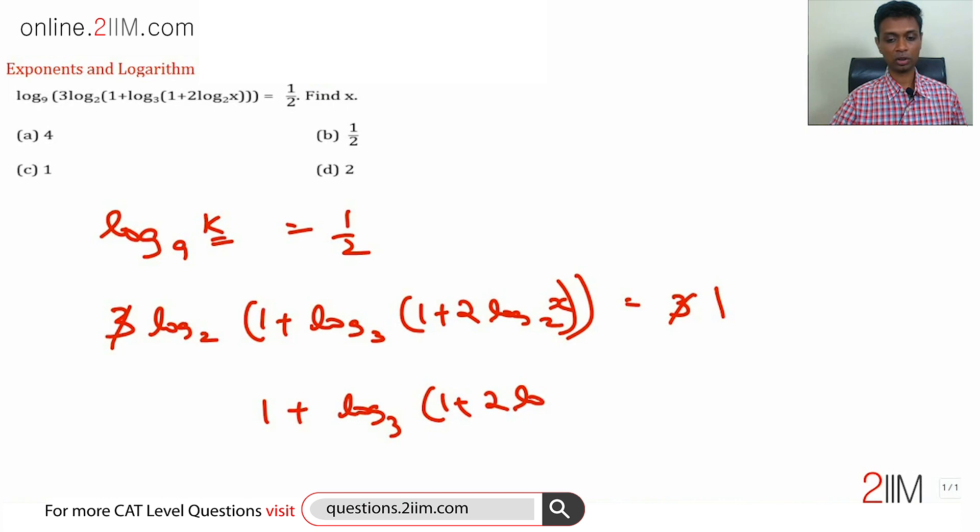Log to the base 2, log of this number to the base 2 is 1, so this whole number should be 2. Or log to the base 3 of 1 plus 2 log x to the base 2.